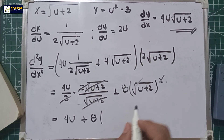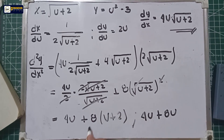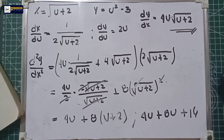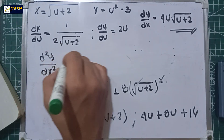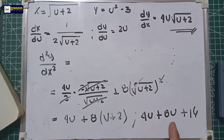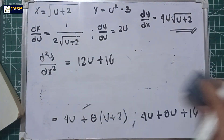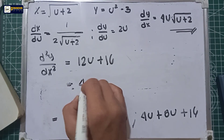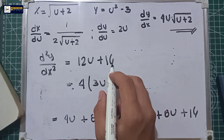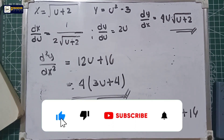After cancellation, the only thing left is 8 multiplied by the quantity u plus 2. Simplifying gives us 4u plus 8u is 12u plus 16. We can factor out 4, so the final answer is 4 times the quantity 3u plus 4. This is the final answer for the second derivative using the parametric form.